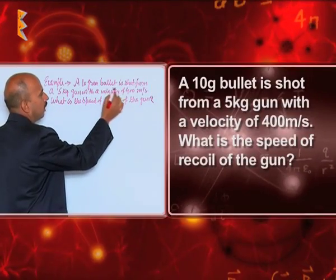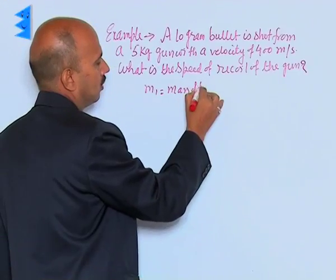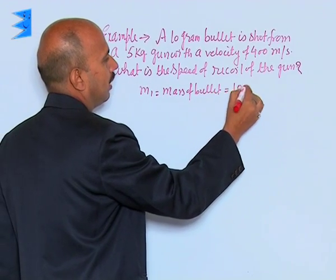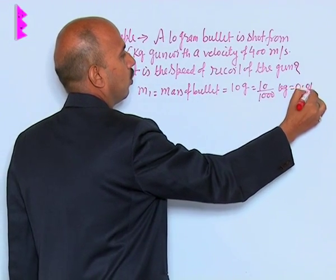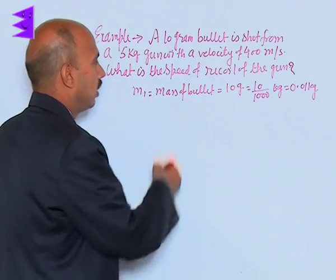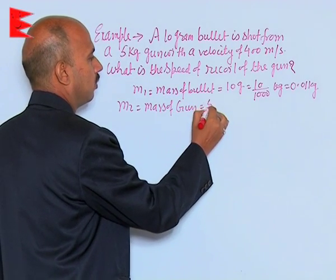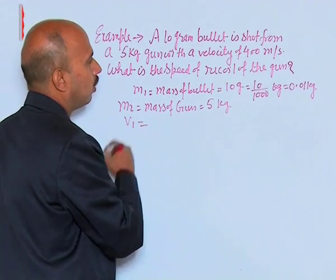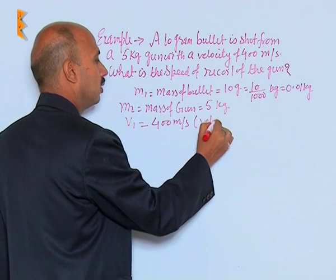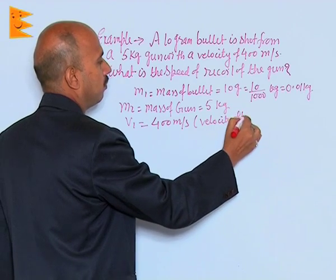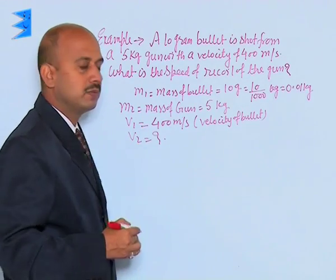In this question, a 10 gram bullet is shot from a 5 kg gun. M1, mass of bullet, equals 10 grams = 10/1000 kg = 0.01 kg. M2, mass of gun, equals 5 kg. V1, velocity of bullet, is 400 meters per second. V2 is the required recoil velocity of the gun, which we have to calculate.